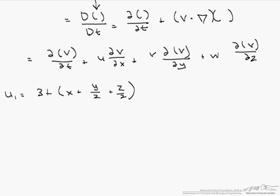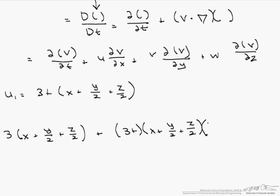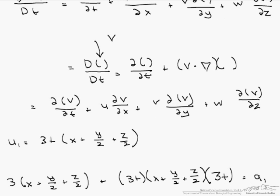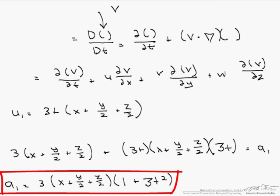Let's take the first term, which is our u with respect to t, and that is 3 times (x plus y/2 plus z/2). Now we add to this u, which is 3t(x plus y/2 plus z/2), times the derivative of u with respect to x, which is just 3t. We can simplify our a1 so it equals 3(x plus y/2 plus z/2) times (1 plus 3t²).